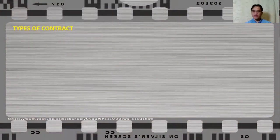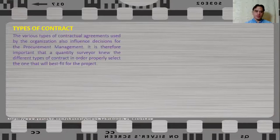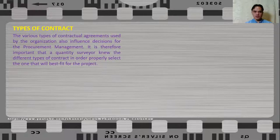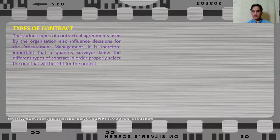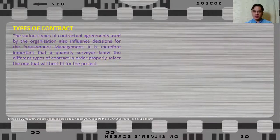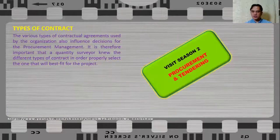Now, why is it that as a quantity surveyor, we need to know the different types of contract? The various types of contract agreements used by organizations also influence decisions for procurement management. It is therefore important that a quantity surveyor knows the different types of contract in order to properly select the one that will best fit the project — not only select, but to properly tailor the contract to fit your project. If you want to know more about procurement management, please visit the season 2 of my videos where I discuss procurement and tendering.